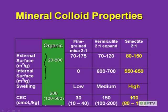Organic colloids are in a field by themselves in terms of surface area. It's difficult to separate internal from external — it's really the whole mass. The surface area range is very high. The average CEC for organic colloids is about 200 centimoles of charge per kilogram, with a range of 100 to 500. So it's clear that the cation exchange capacity of organic matter is much higher — a little organic matter goes a lot further than a little clay.